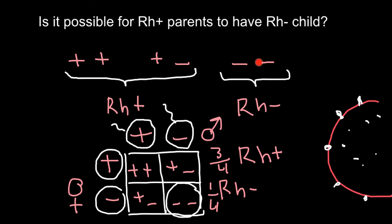Now imagine that some people have both alleles — from the mother's side and the father's side — mutated. Those proteins cannot reach the surface of the red blood cell and cannot cause a reaction from the recipient. We call these people Rh negative, because they basically do not have these proteins on the surface of their red blood cells.